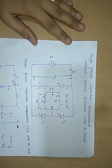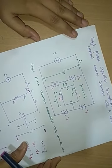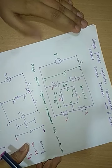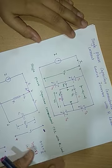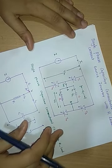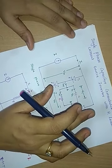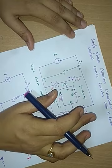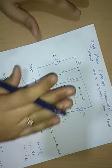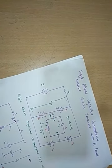In the current source inverter, the DC input current is converted into AC output current, and the frequency of this AC output current depends upon the rate of triggering of the SCRs. The amplitude of AC output current can be adjusted by controlling the magnitude of DC input current. The current source inverter does not require any feedback diode as in case of voltage source inverters. The commutation circuit used in a current source inverter is very simple as it consists of only the commutating capacitor.